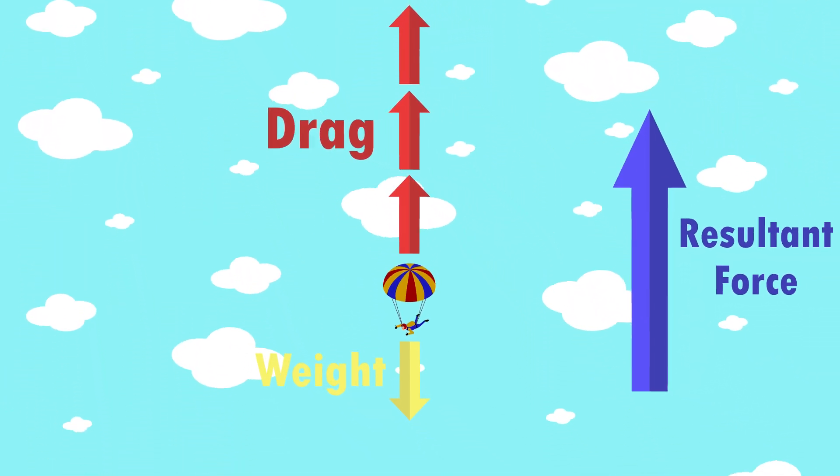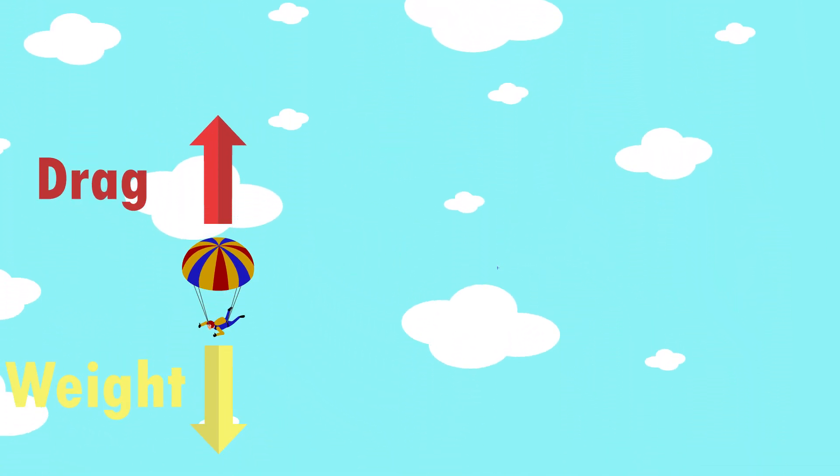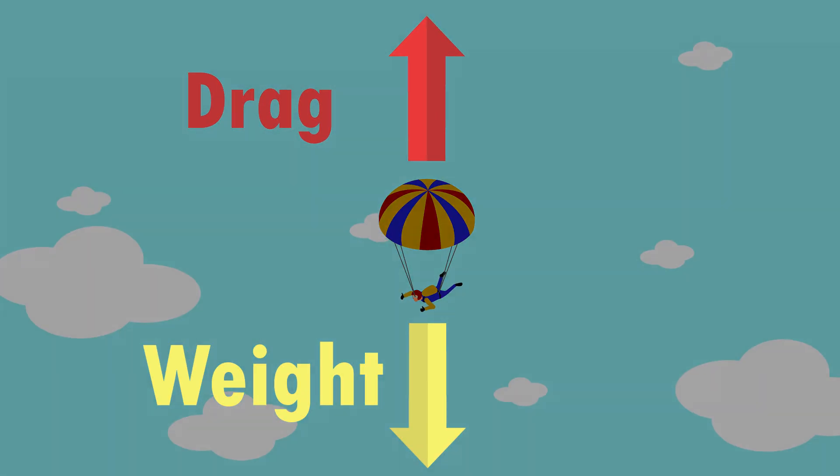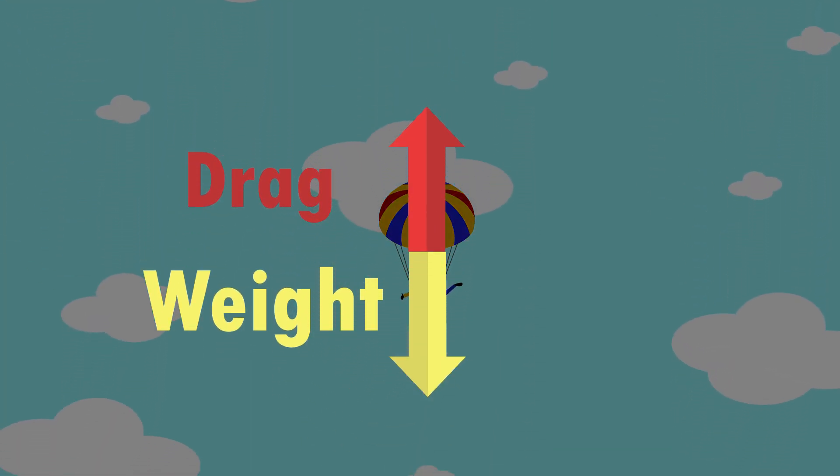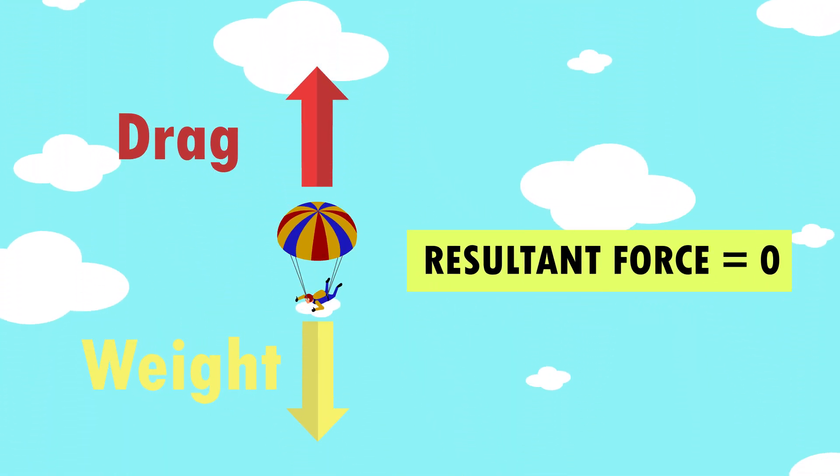As they slow down, the drag force decreases. Therefore the resultant force decreases until the drag again is equal and opposite to the weight. The forces are balanced and we now have a new lower terminal velocity.